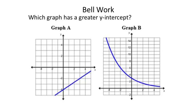For this bell work, we just want to know which of these two graphs has the greater y-intercept. I don't care if one's linear or exponential. The only thing I care about is where the y-intercept is. For graph A, the y-intercept is where the blue line crosses the y-axis — the vertical number line — giving us the ordered pair (0, -4).